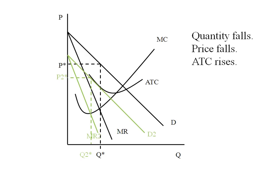If you look at the average total cost curve at Q star and Q2 star, you see we moved up and to the left. So for these three reasons, the monopolist will earn less of a profit when they're faced with a decrease in market demand.